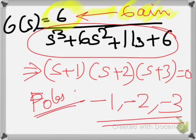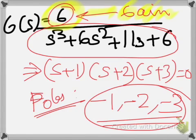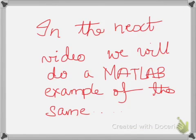To summarize: the zero of this transfer function is zero, the gain is 6, and the poles are -1, -2, and -3. I hope you have understood how to obtain the zeros, poles, and gain of a transfer function theoretically. In my next video I will demonstrate the same using MATLAB software. Thank you.